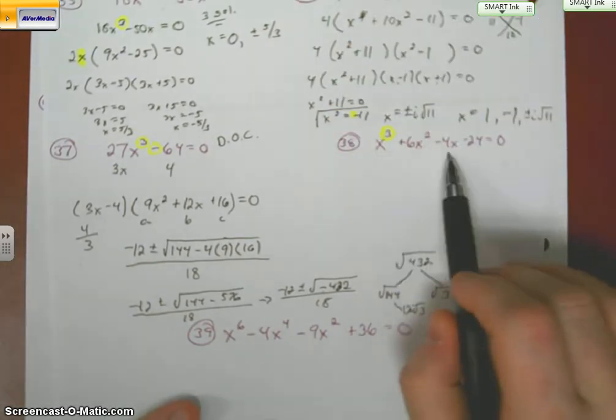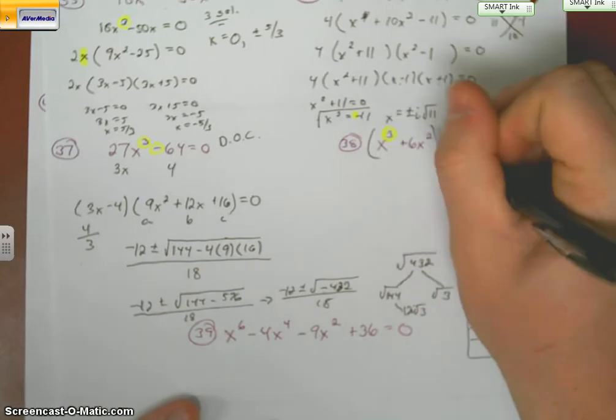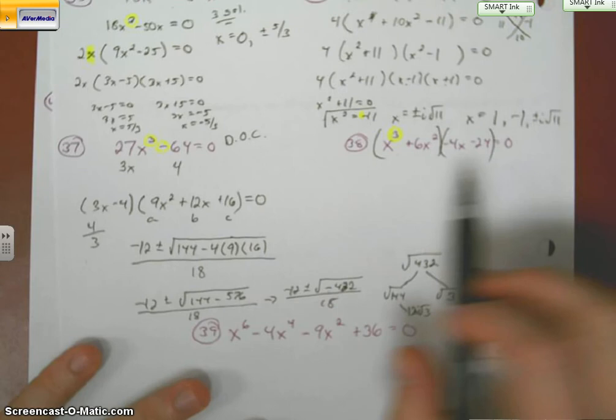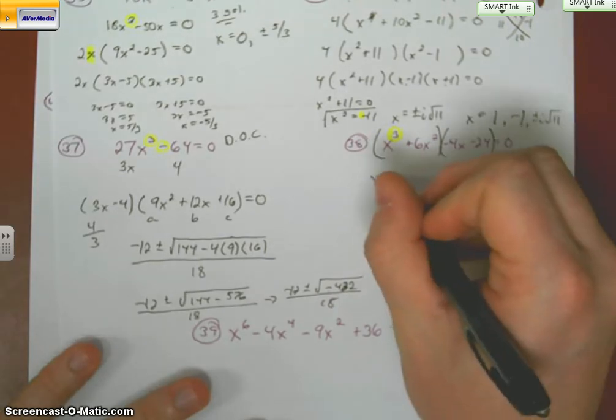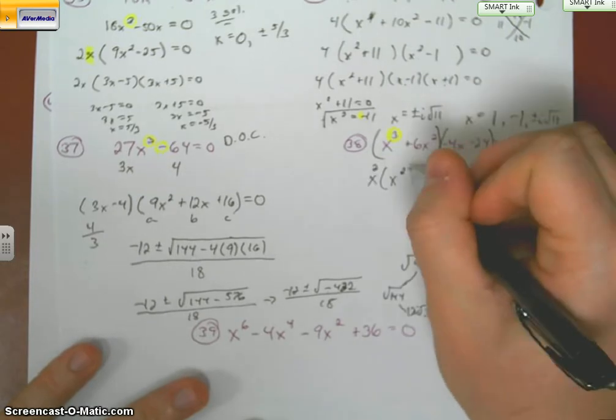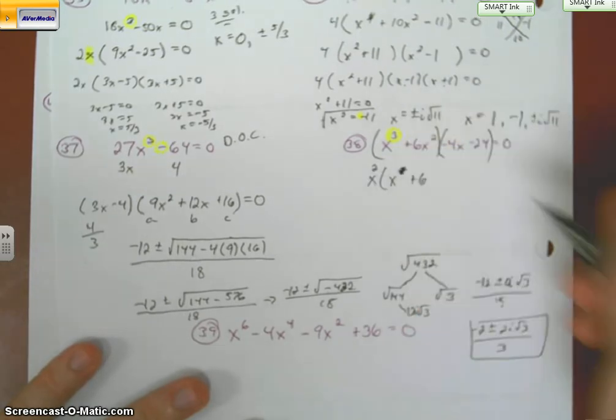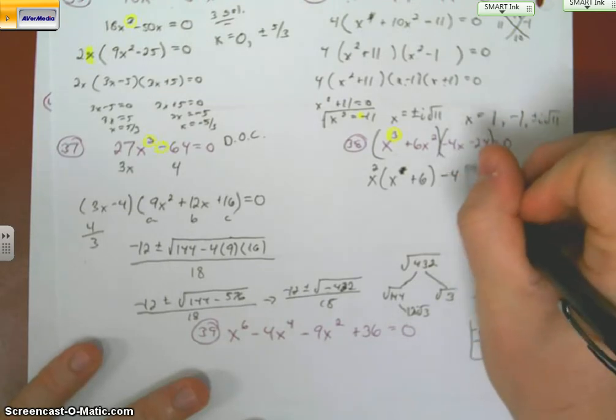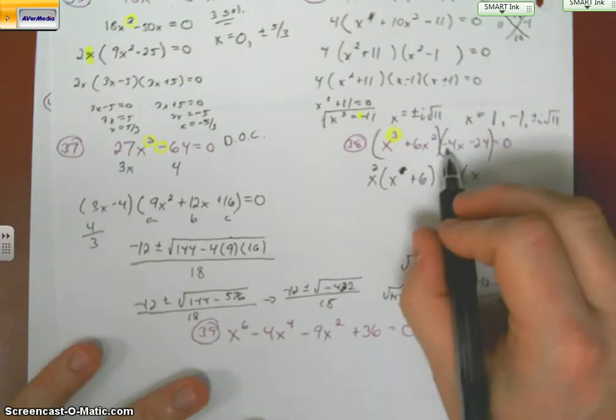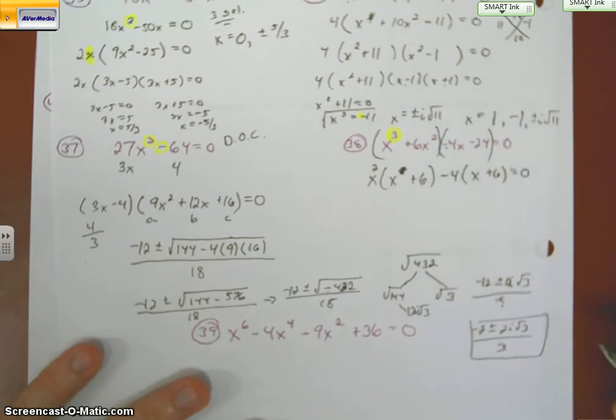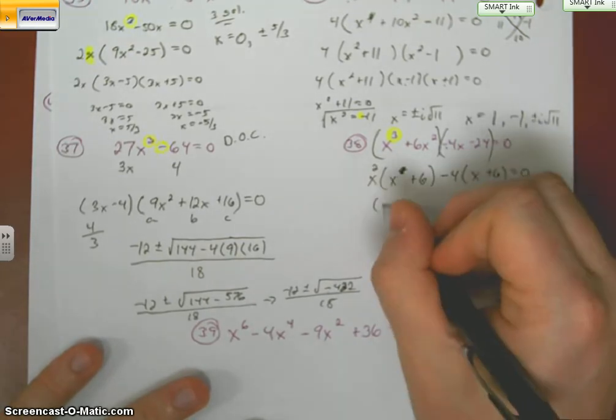I have 1, 2, 3, 4 terms. Our method of choice is factor by grouping. First parenthesis has a GCF of x squared. The next one has a GCF of 4, a negative 4 since we had to bring it out. Good news is our parenthesis match now.